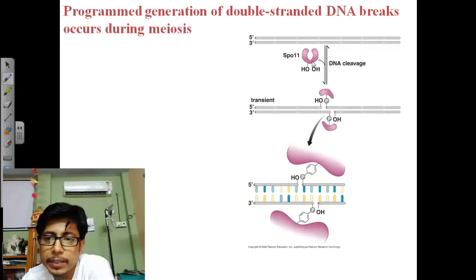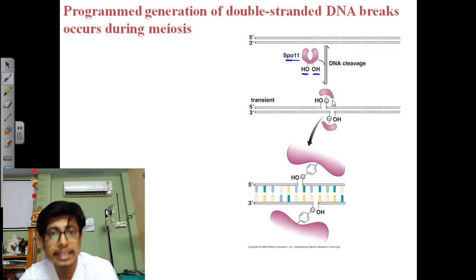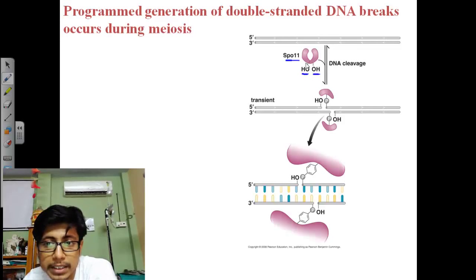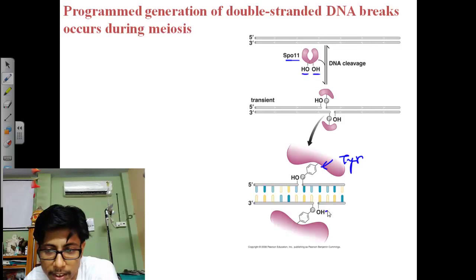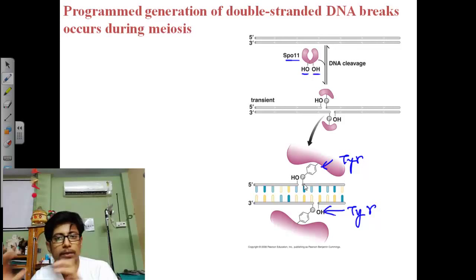We have a double-stranded DNA and a protein. In this example, the protein has a serine recombinase structure with a hydroxyl group in the side chain. With the help of this protein, it loads itself onto the DNA and the hydroxyl group creates a break. It initiates the double-stranded break. Actually, looking at the structure — with the benzene ring and aromatic group — this is a tyrosine recombinase, not serine. This tyrosine recombinase holds onto the structure and forms a double-stranded break.